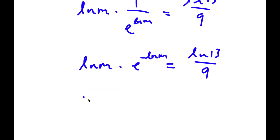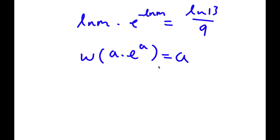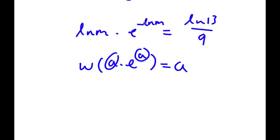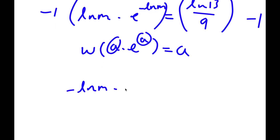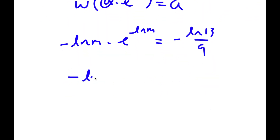The Lambert W function states that W of (a times e to the power of a) equals a. I'm going to multiply both sides by negative one, because we want the a terms to match — right now we have negative ln m and positive ln m. Multiplying by negative one gives: negative ln m times e to the power of negative ln m equals negative ln 13 over 9. Taking the Lambert W function of both sides gives negative ln m equals W of negative ln 13 over 9.